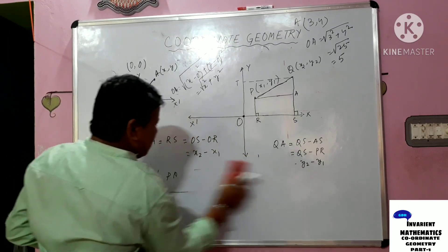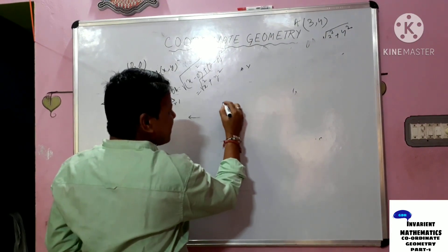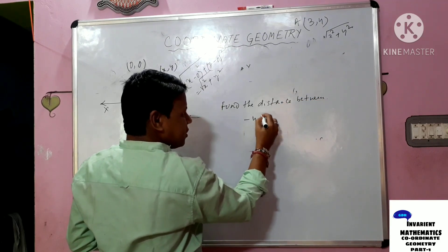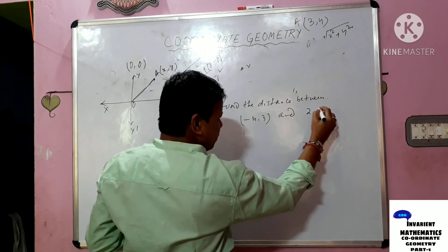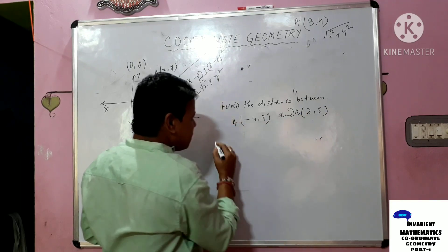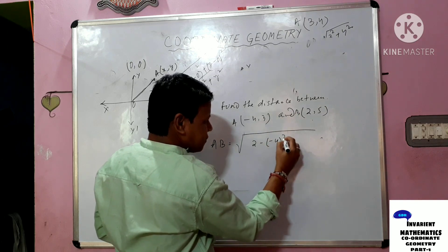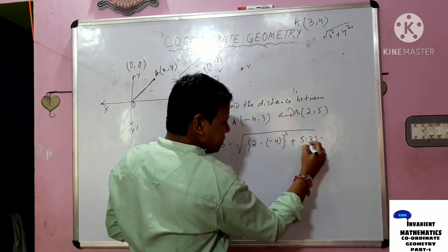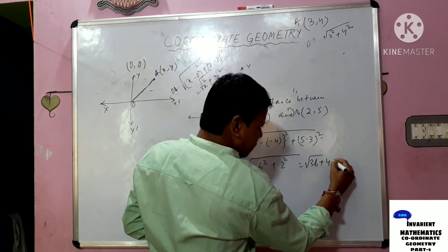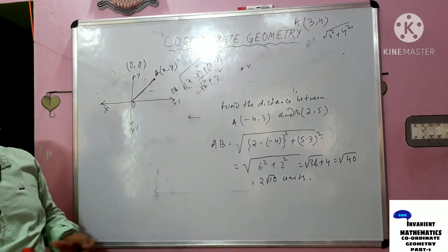Now let's do one example: find the distance between (-4, 3) and (2, 5). Consider these as points A and B. According to the distance formula, AB = √((2-(-4))² + (5-3)²) = √(6² + 2²) = √(36 + 4) = √40 = 2√10 units.